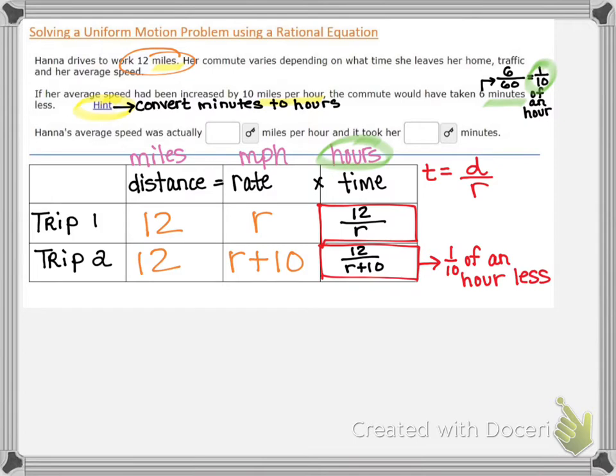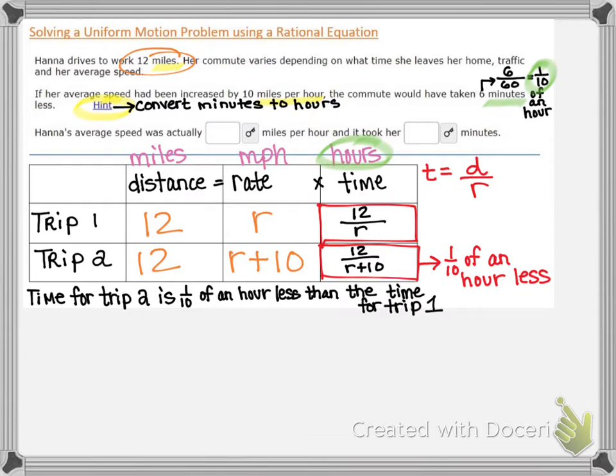Now let's write our equation out in words first before we just start trying to place the variables in the appropriate spot. We know that the time for trip two is one tenth of an hour less than the time for trip one. And that should help us set up our equation if we translate this sentence into algebra.